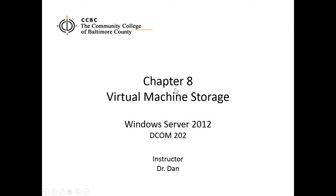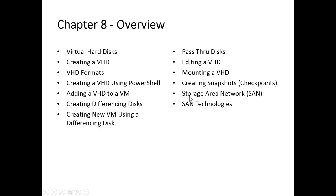Let's get started on Chapter 8, Virtual Machine Storage. In this chapter, we will discuss virtual hard disks, creating a virtual hard disk, virtual hard disk formats, creating a virtual hard disk using PowerShell, adding a virtual hard disk to a virtual machine, creating differencing disks, and creating a new virtual machine using a differencing disk. We will look at pass-through disks, editing a virtual hard disk, mounting a virtual hard disk, creating snapshots (also called checkpoints), storage area networks, and storage area network technologies.